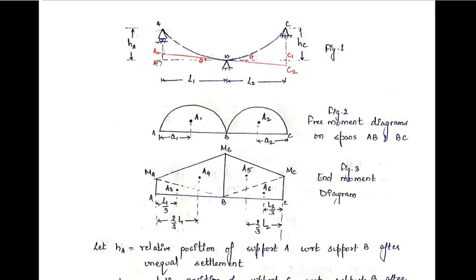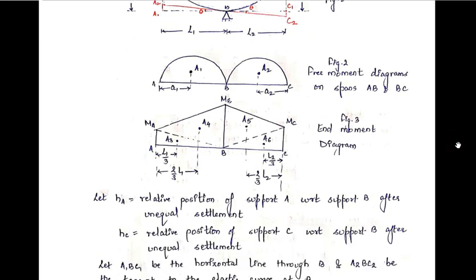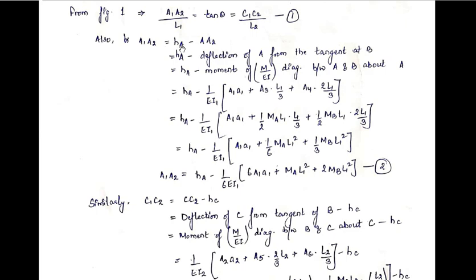Now let's find the value of a1a2. From the diagram, a1a2 equals ha minus aa2. Here, aa2 is the deflection of point A with respect to the tangent drawn at point B. By the moment area theorem, the deflection of any point with respect to the tangent drawn at another point equals the moment of the M/EI diagram between those two points about that point.